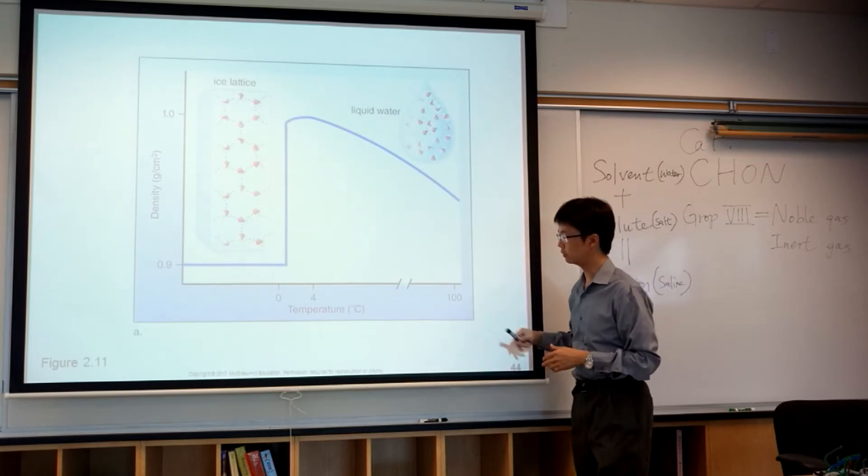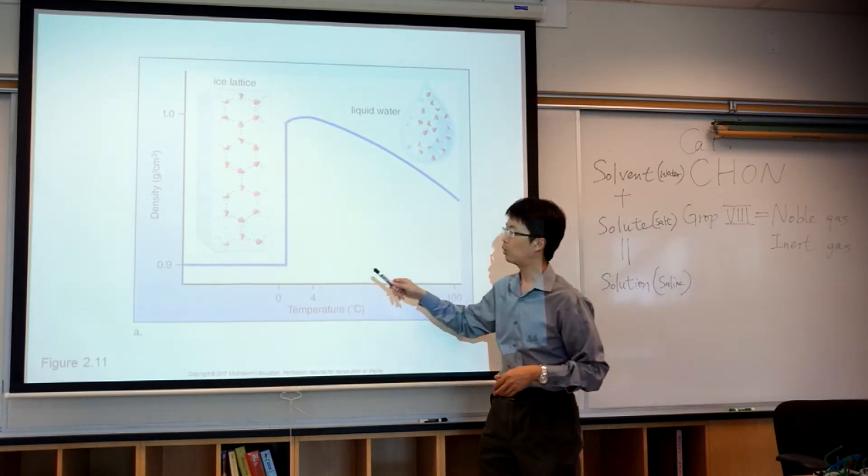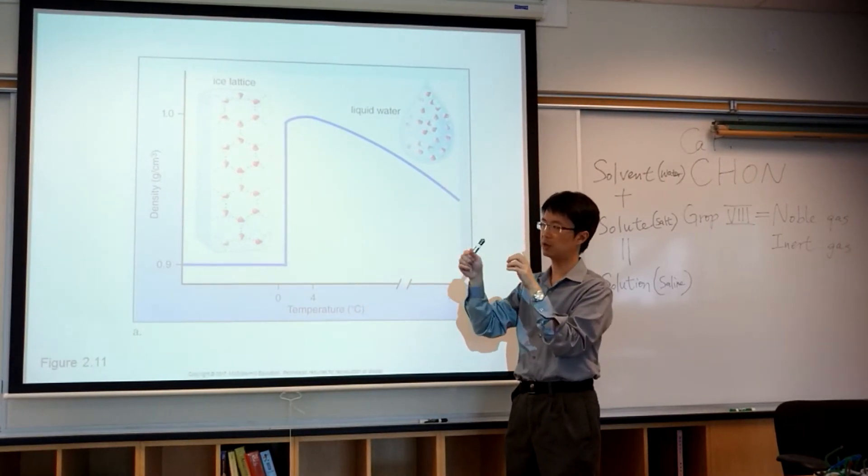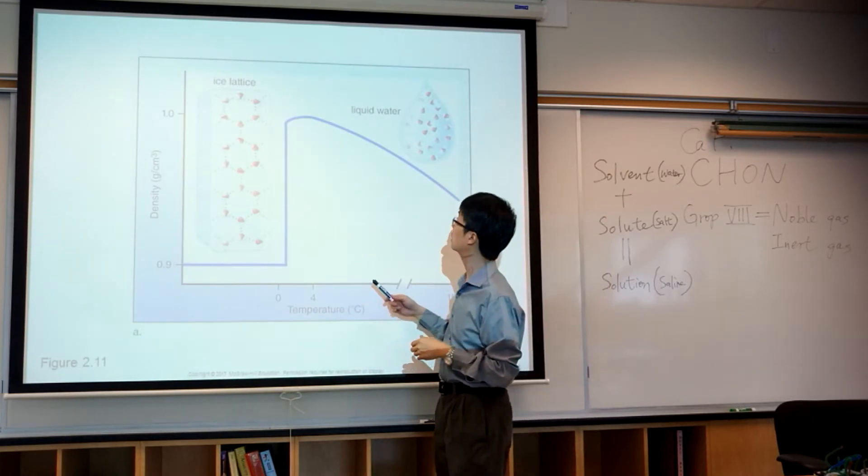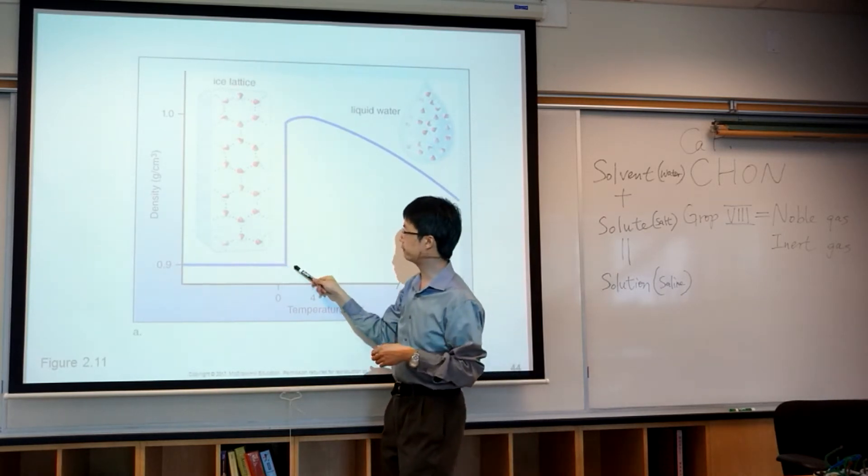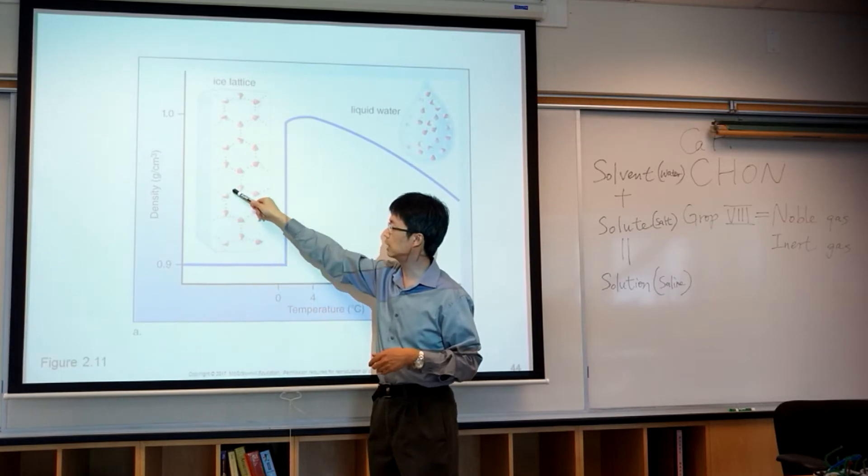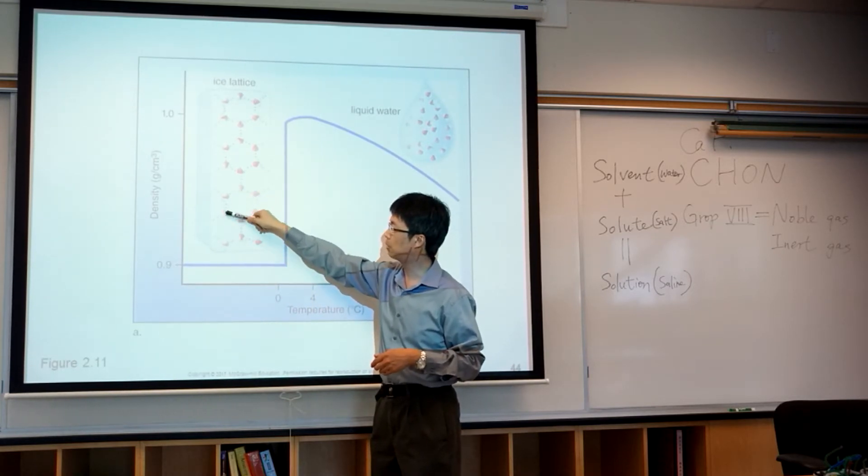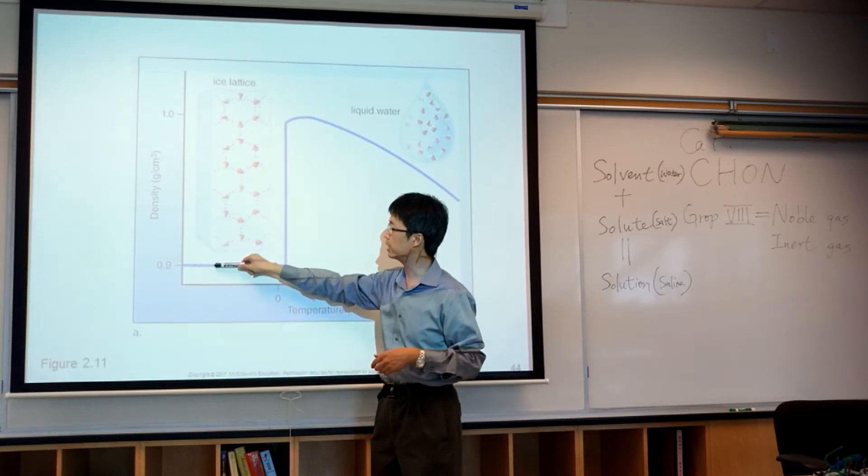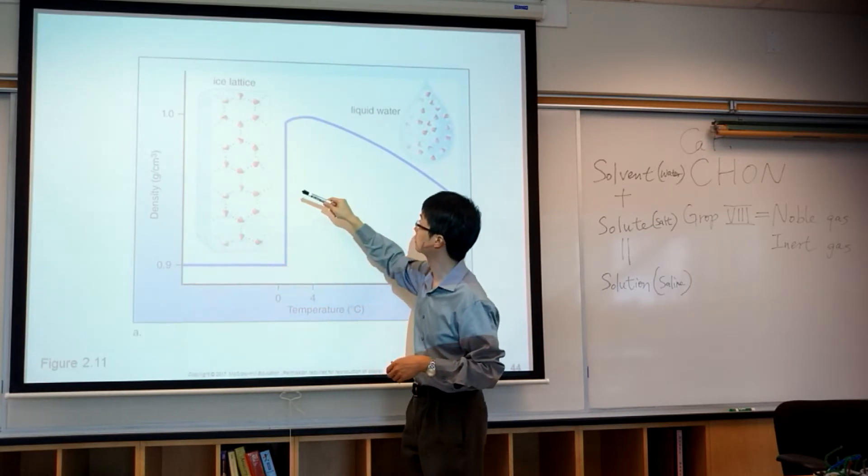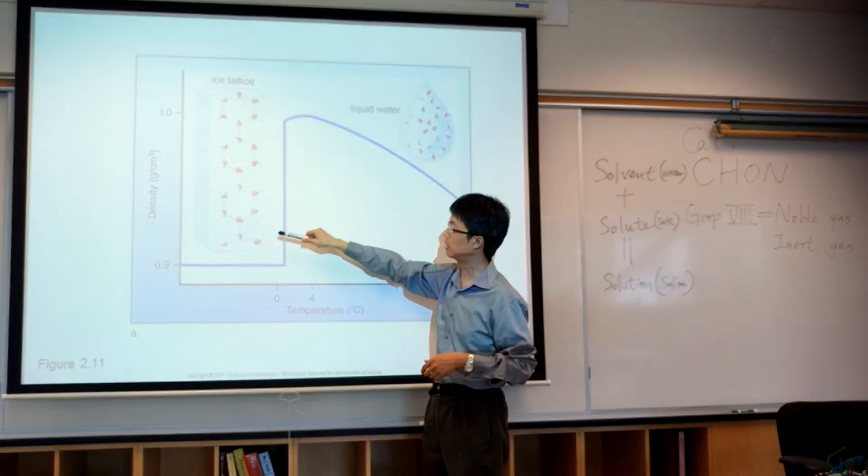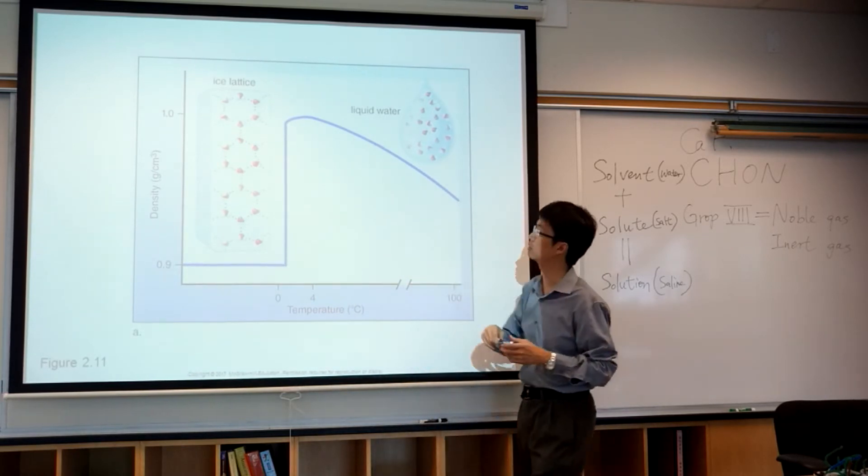So this is the graph: x-axis is the temperature, y-axis is the density - how close each water molecule is together. As you can see, around four degrees the density is the highest. But after four degrees, when it forms the crystal lattice of ice, the hydrogen bonds will maximize the distance between each water molecule. Then the density becomes 0.9 and is stable at that density. In the liquid, as you can see, liquid has a relatively higher density than ice. This is why ice will be floating on the surface of the liquid.